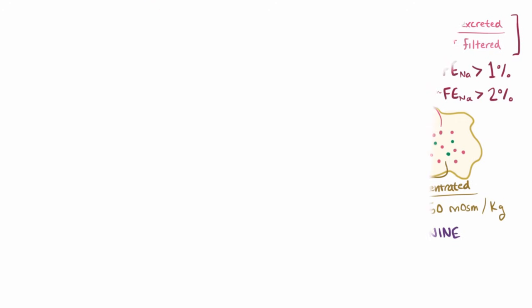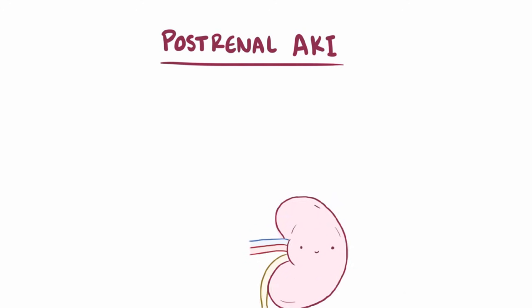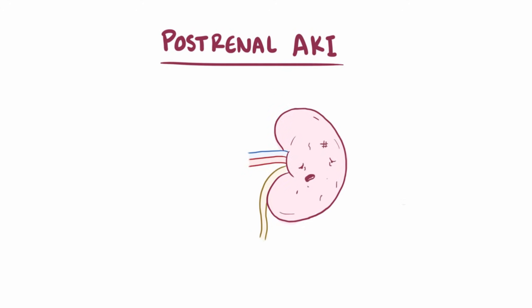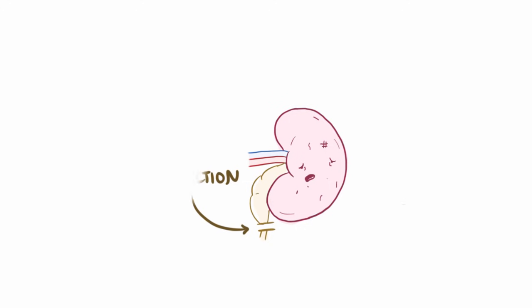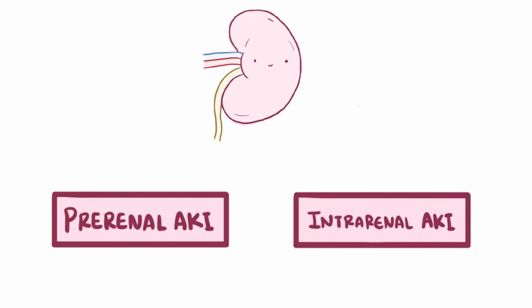Alright, so as a quick recap, post-renal acute kidney injury is where the kidneys aren't functioning at 100%, and this is due to some obstruction in the ureters that blocks the flow of urine. Now that you know all about post-renal AKI, check out these other two videos on pre-renal AKI and intrarenal AKI.